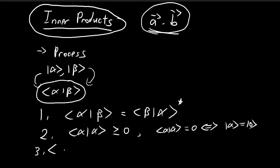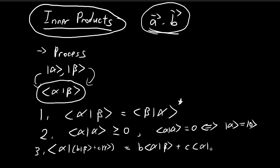The third rule is that if I have a vector alpha and I'm taking the inner product of alpha with another vector expressed as a linear combination of two vectors beta and gamma — say b times beta plus c times gamma — then the inner product must be defined such that this expression equals b times the inner product of alpha and beta, plus c times the inner product of alpha and gamma. These are the three rules you need to satisfy to have a proper inner product.